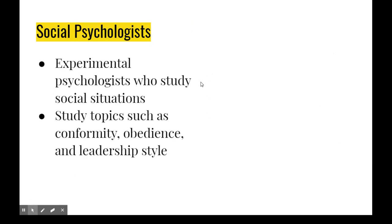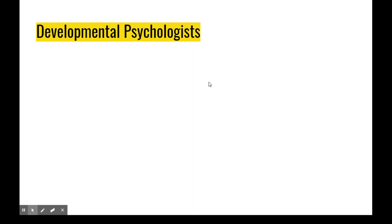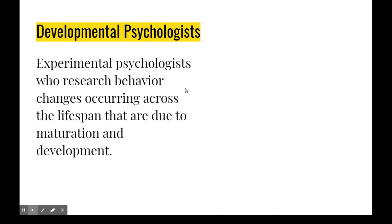Social psychologists study different social situations — this is another basic form. They're studying conformity, obedience, leadership, why people act the way they do around certain groups, mob mentality, things like that. Developmental psychologists work with kids and talk about how people and children develop over their lives — how we mature physically, socially, as well as cognitively.